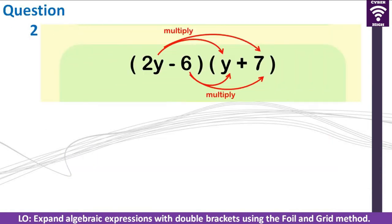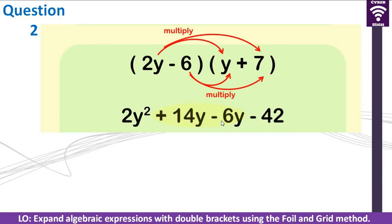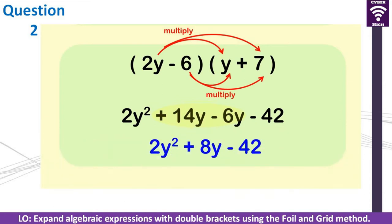Let us look at the second example. We have to expand its brackets. 2Y times Y gives us 2Y squared — remember, Y and Y multiply each other to give Y squared, and the coefficient is 2. Then 2Y times 7 gives us 14Y. Negative 6 times Y gives us negative 6Y. Then negative 6 times positive 7 gives us negative 42. It's always important to know how to operate with directed numbers — if you put positive 42 here, the answer will be wrong. Simplifying the middle terms gives us 2Y squared plus 8Y minus 42.